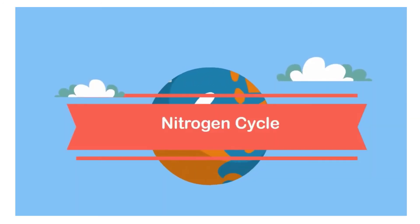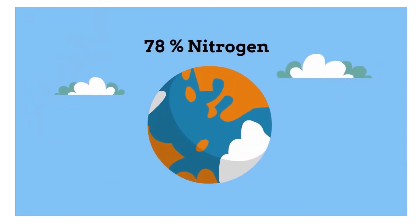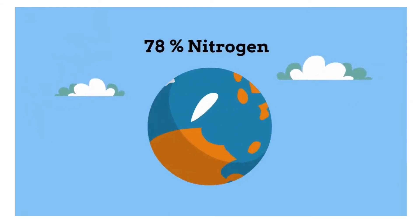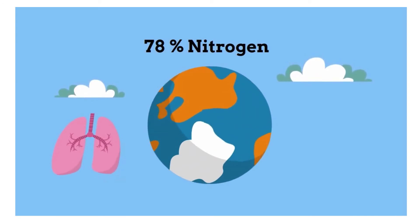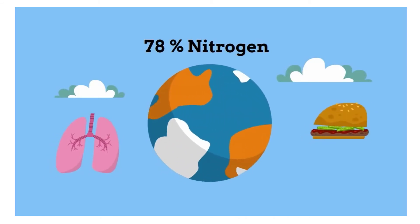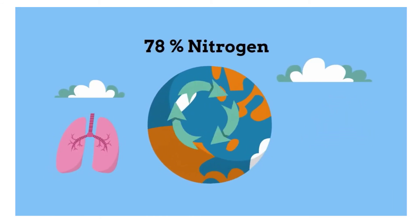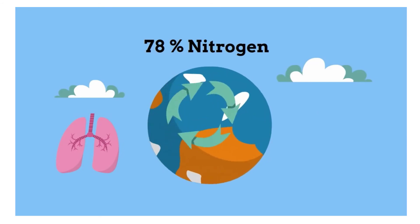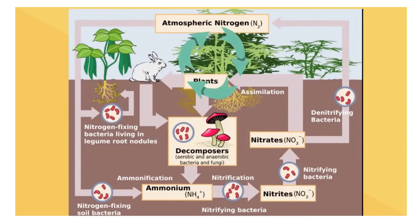Our atmosphere is made up of 78% nitrogen. We need the nitrogen for our DNA and for proteins. But we just can't breathe in the nitrogen like oxygen. We must absorb our nitrogen in our food. Nitrogen follows a cycle where it travels from the atmosphere to the soil to animals and back in a cycle.